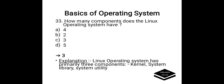How many components does the Linux operating system have? Options are A. 4, B. 2, C. 3, D. 5. Correct answer is option C, 3. The Linux operating system primarily has 3 components: kernel, system library, and system utility.